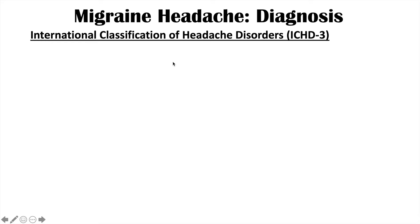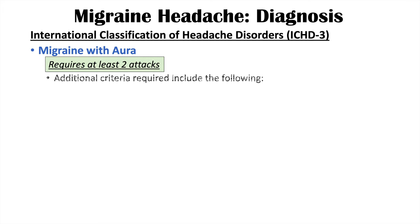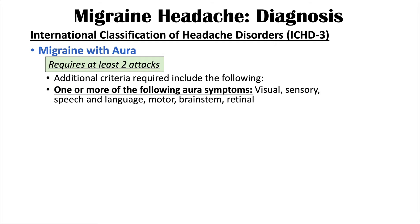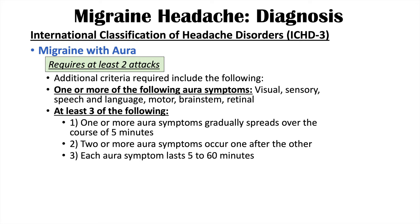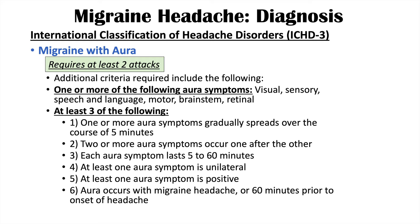For migraine with aura, at least two attacks are required, plus additional criteria. One or more aura symptoms must be present from the following categories: visual, sensory, speech and language, motor, brainstem, or retinal. Additionally, at least three of the following must be present: one or more aura symptoms gradually spreading over five minutes; two or more aura symptoms occurring consecutively; each aura lasting five to 60 minutes; at least one aura symptom being unilateral; at least one aura symptom being positive; and the aura occurring with the headache or within 60 minutes prior to onset.